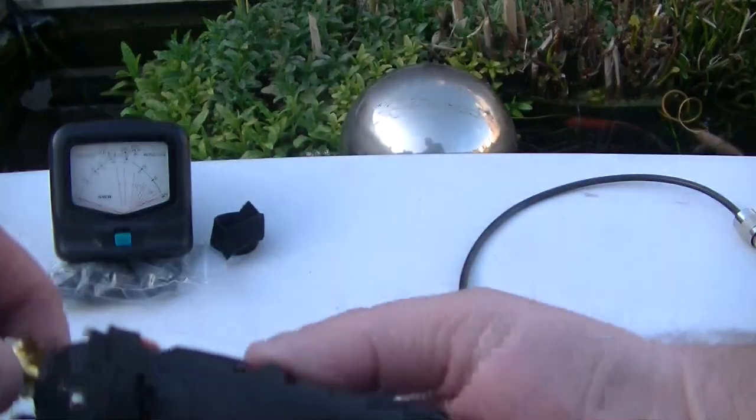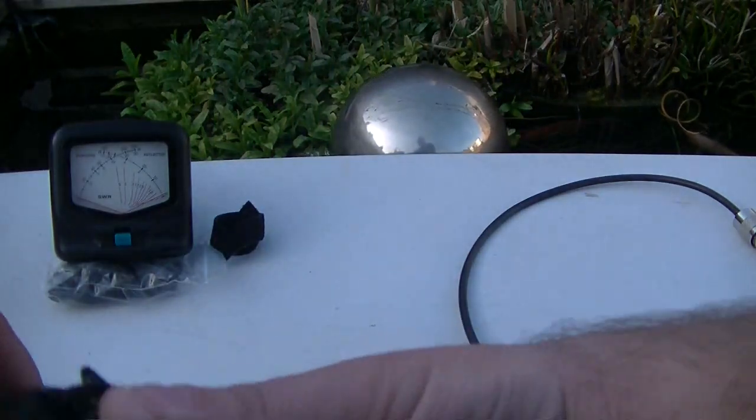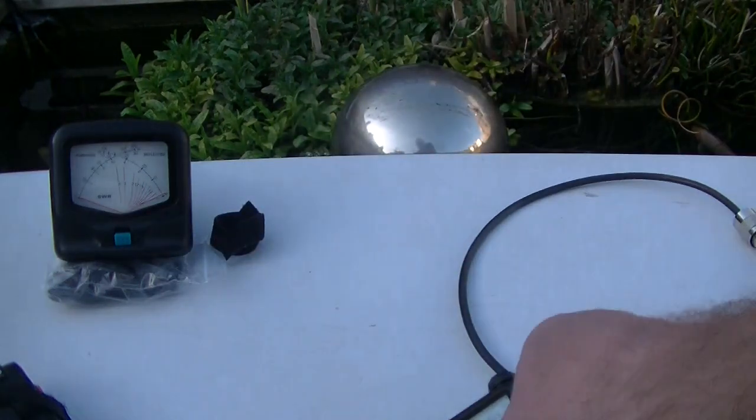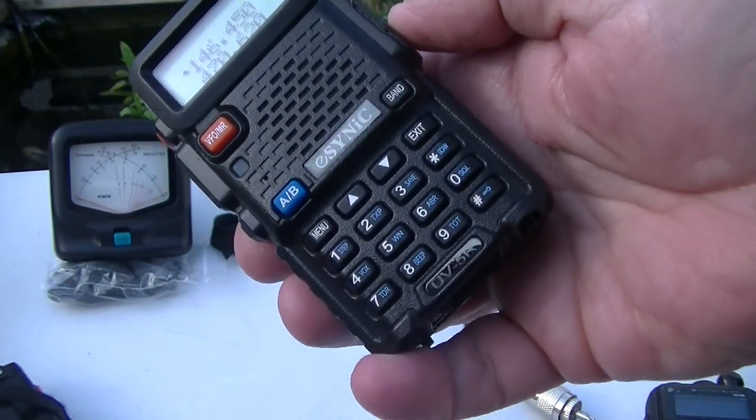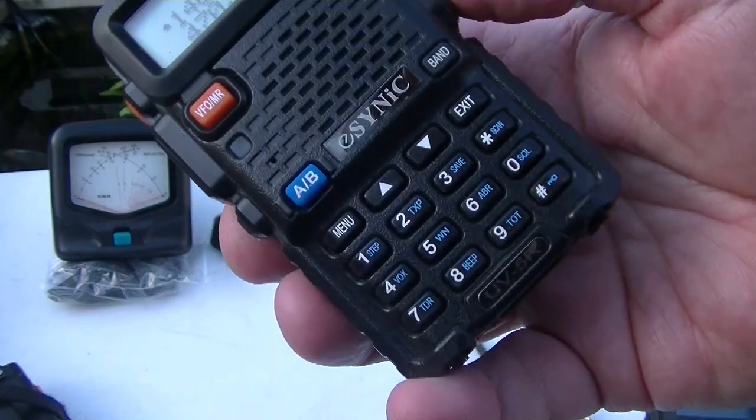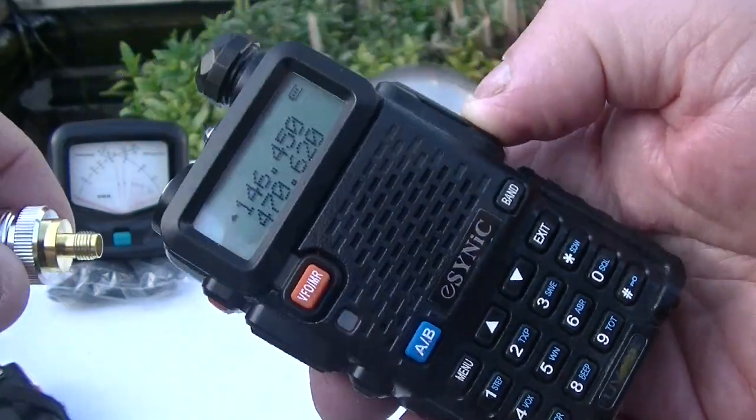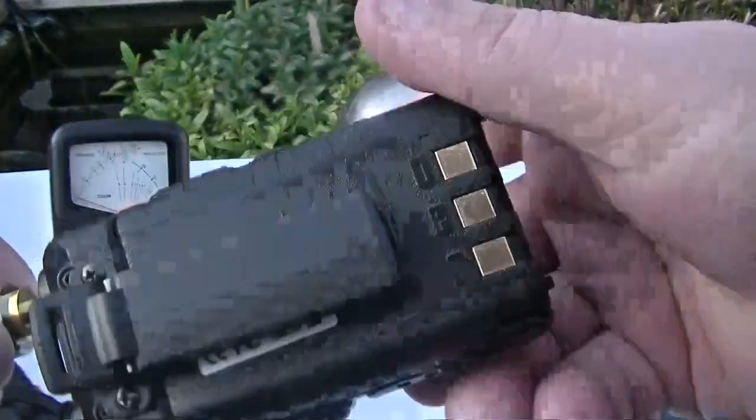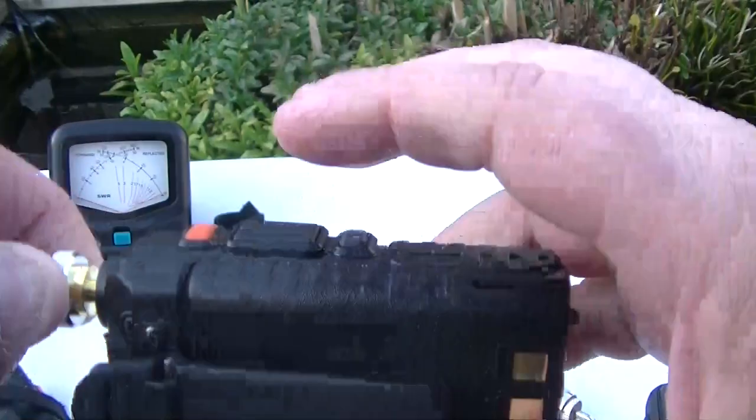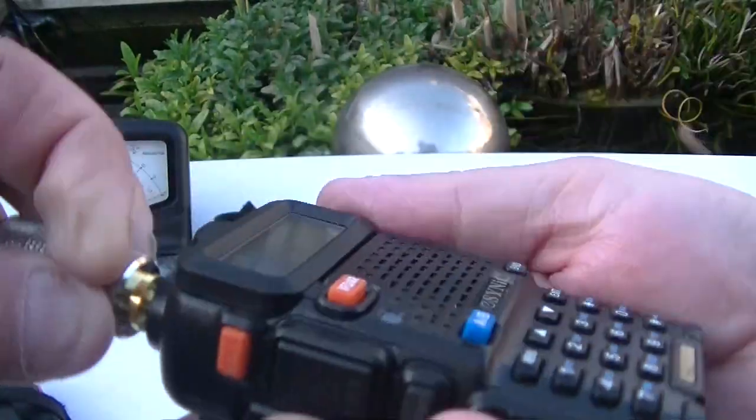Radio 1. Second UV5R, different make though, so what it is really, who knows. It's a good little radio. It comes with a USB desktop charger. Let's give it a go.